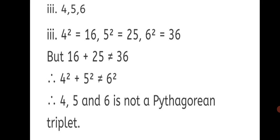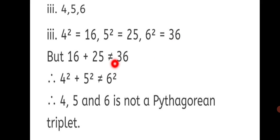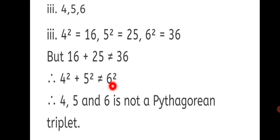You don't need to show the actual sum — you can add in rough and then check whether it is equal to 36 or not. If not equal, write 'not equal to 36'. Then write 4 square plus 5 square is not equal to 6 square, and state the final answer.